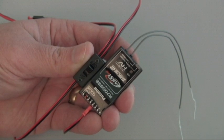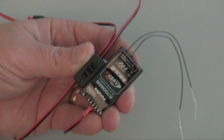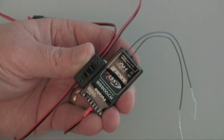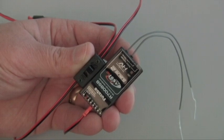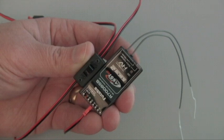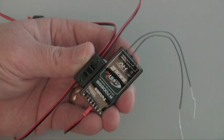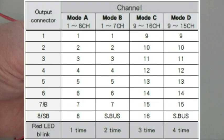First thing we need to do is put each receiver in the correct mode. We need the first receiver to respond to channels 1 through 8 and the second receiver to respond to channels 9 through 16. Looking at the chart that's included both in your 18MZ manual and the R7008 manual, you can see that the first receiver needs to be in mode A and the second receiver needs to be in mode C.